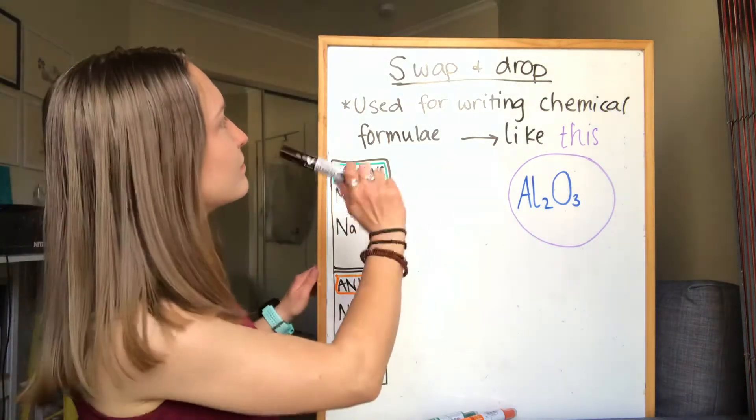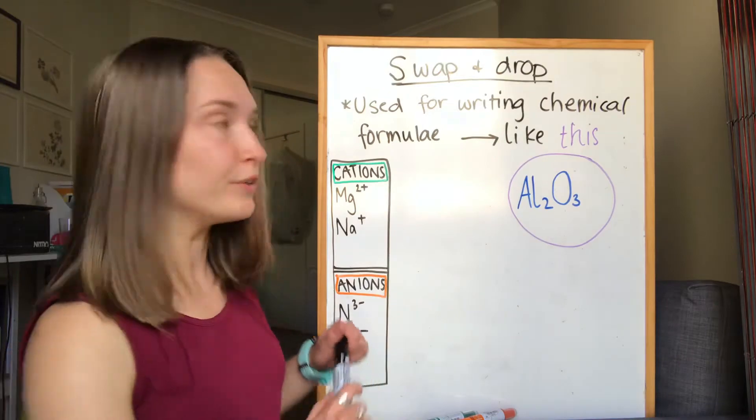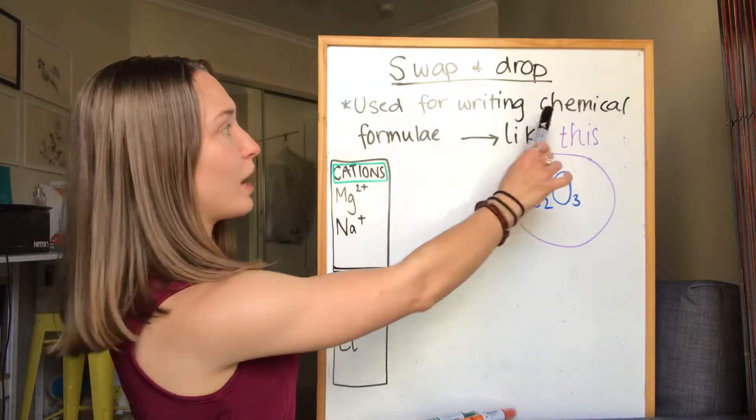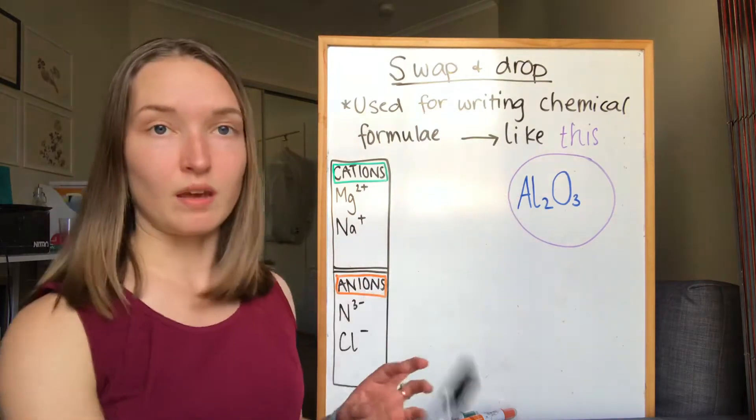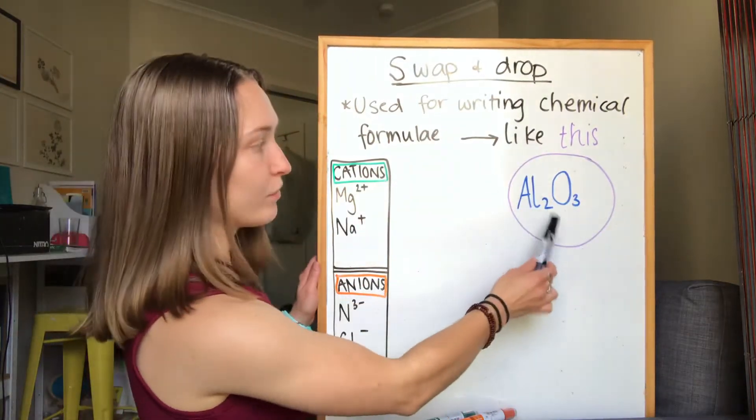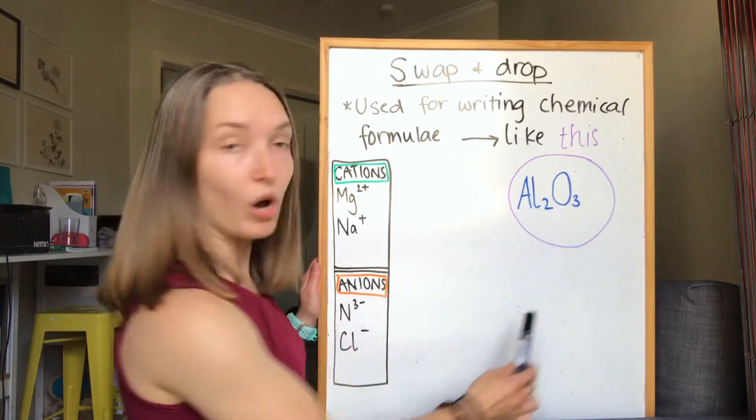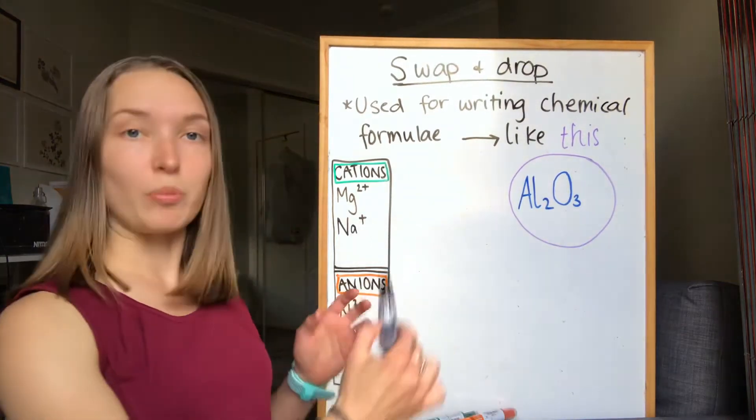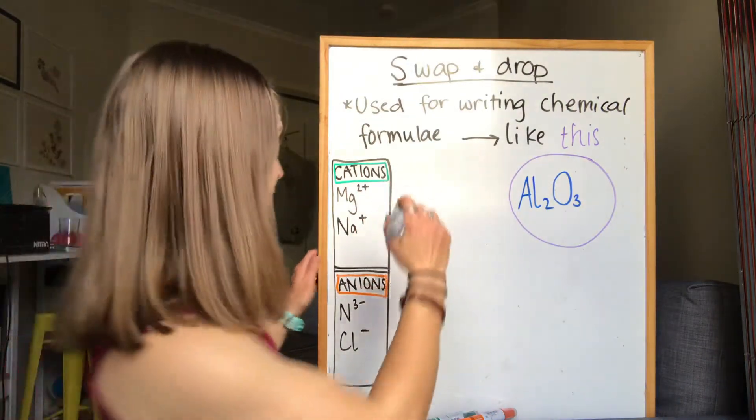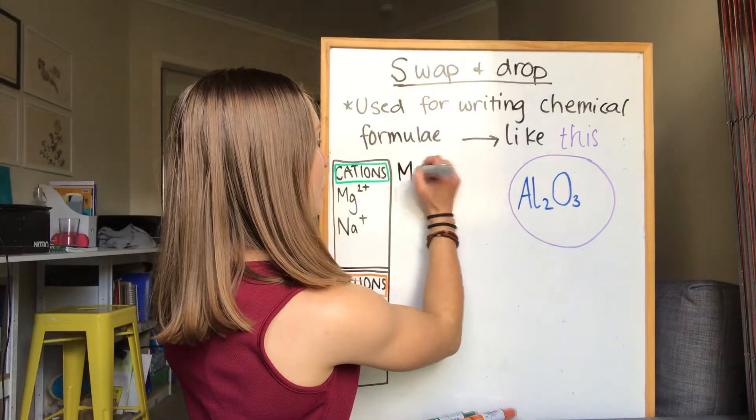All right, as promised I'm going to do a video on the swap and drop method which we use when we're writing chemical formulas. So when I say chemical formula, it's something that looks like this. The name of this one is aluminium oxide. I'm going to do a practice one with you to make magnesium nitride.